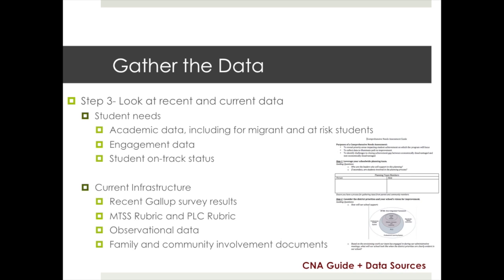There is additional data that you will want to gather to help you focus on student needs. Some academic data will be provided to you from the Office of Accountability Research and Measurement. Other data to consider includes student engagement data and data from the Early Warning System. The data regarding your school's infrastructure and support system is also critical. Don't forget to consider the recent Gallup survey results, ratings on the MTSS and PLC rubrics, any observational data collected, as well as documents reflecting your family and community involvement efforts. Determine who will gather each data component and organize it for easy analysis by your team.